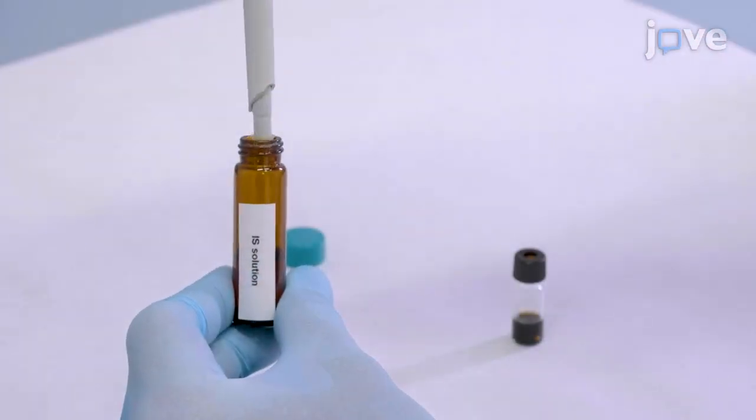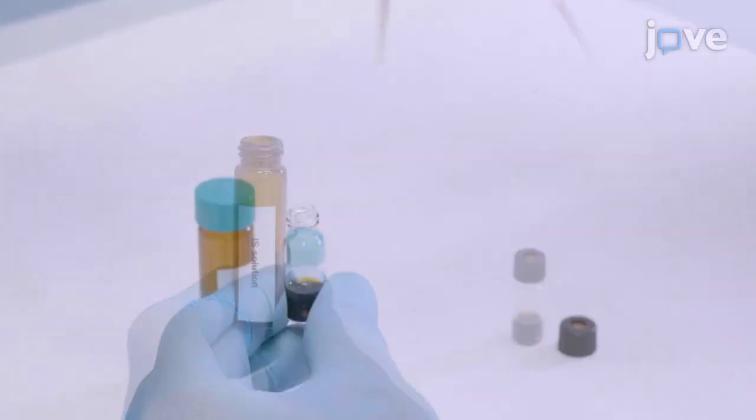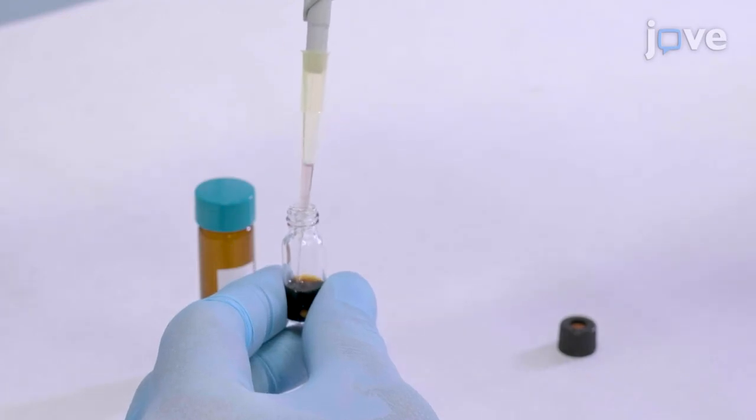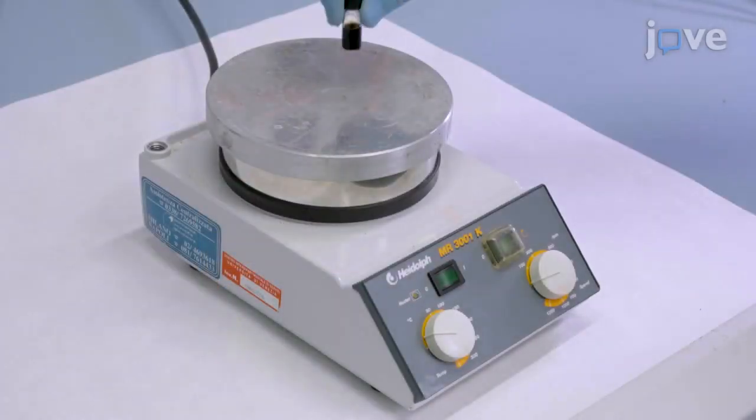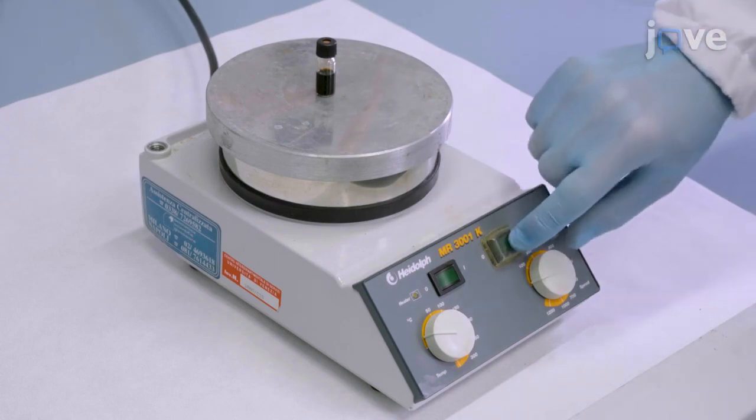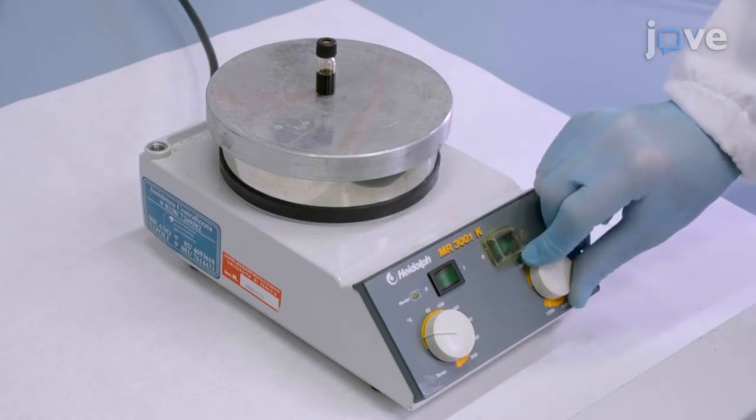Using a micropipet, add 100 uL of the internal standard solution to the sample vial. Then magnetically stir the resulting dispersion at 500 rotations per minute.